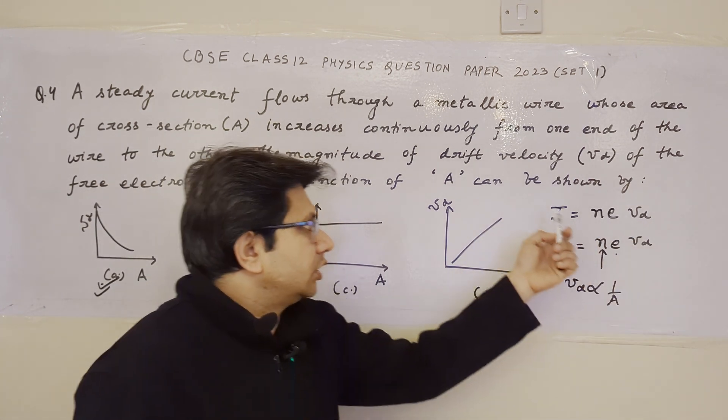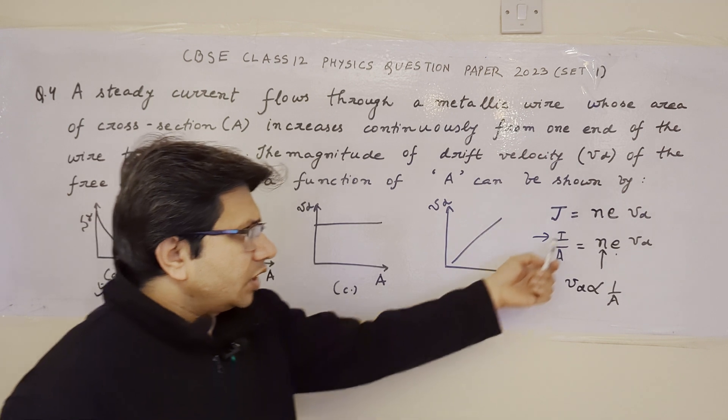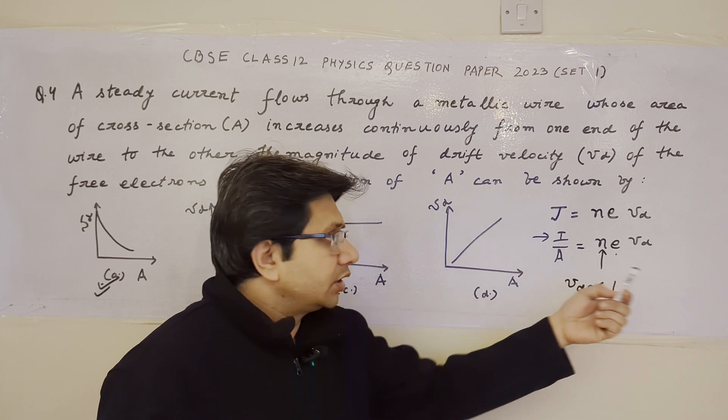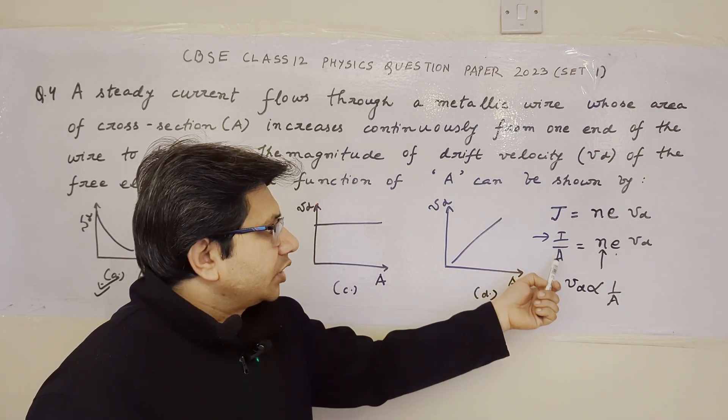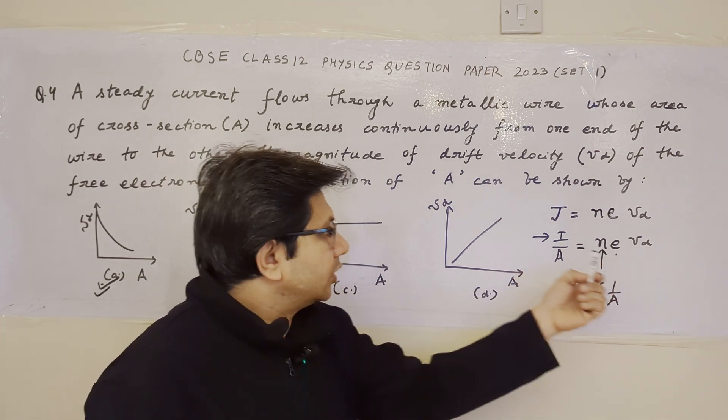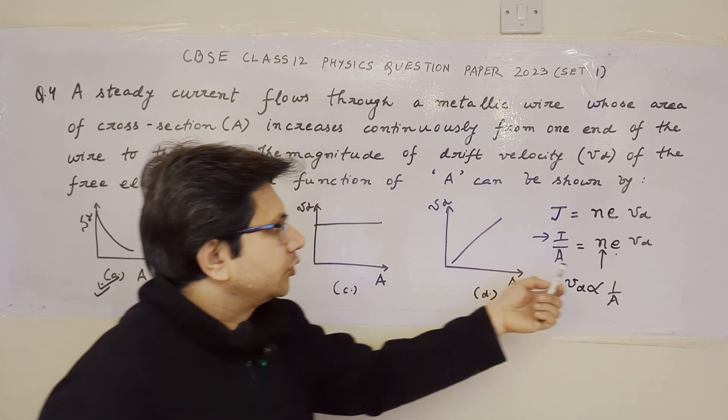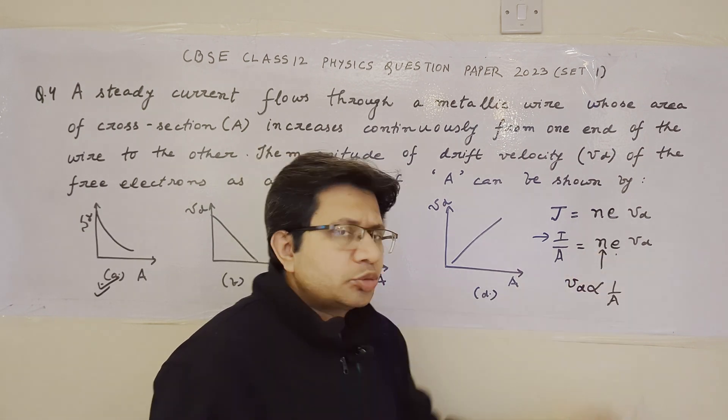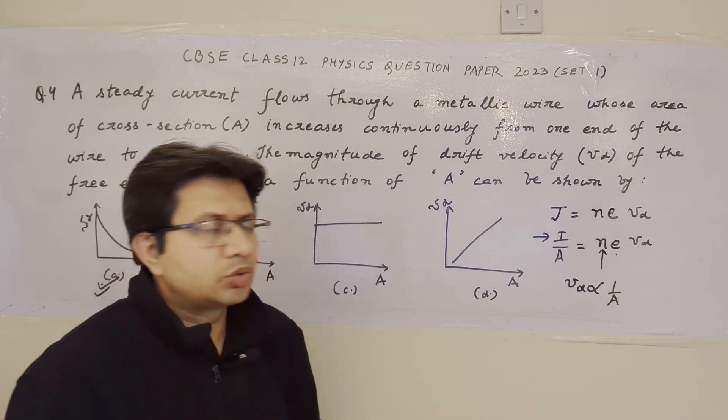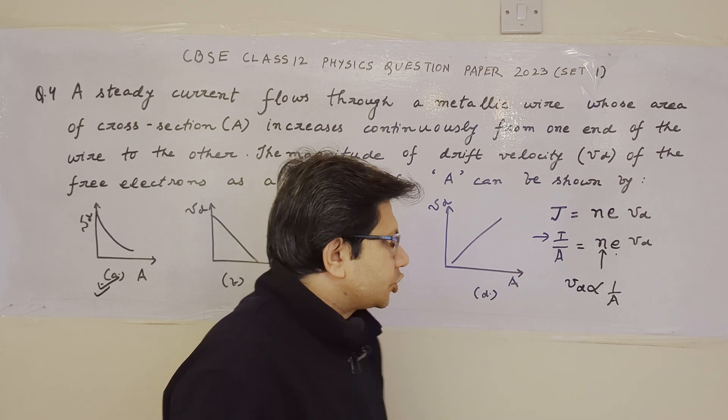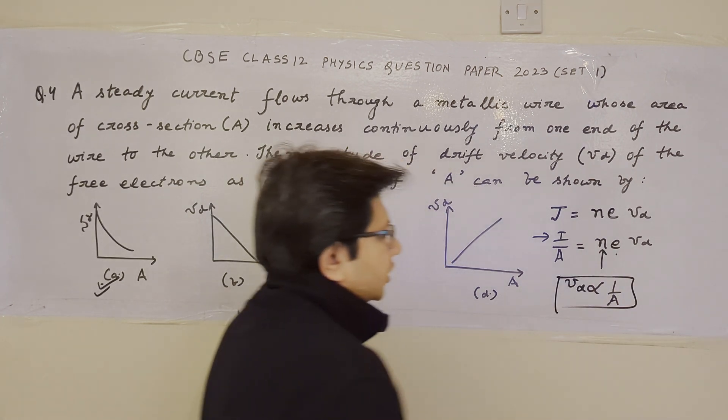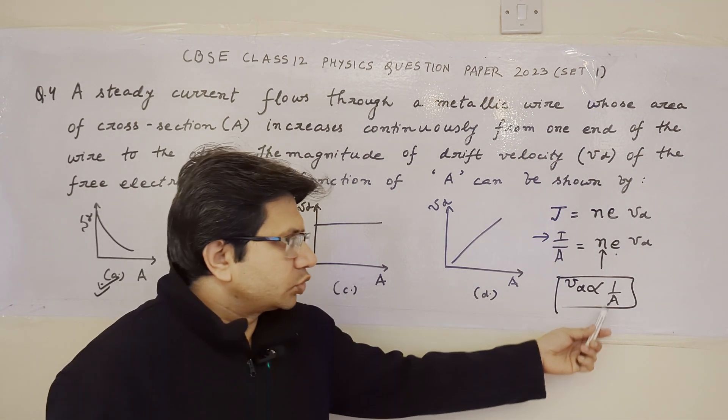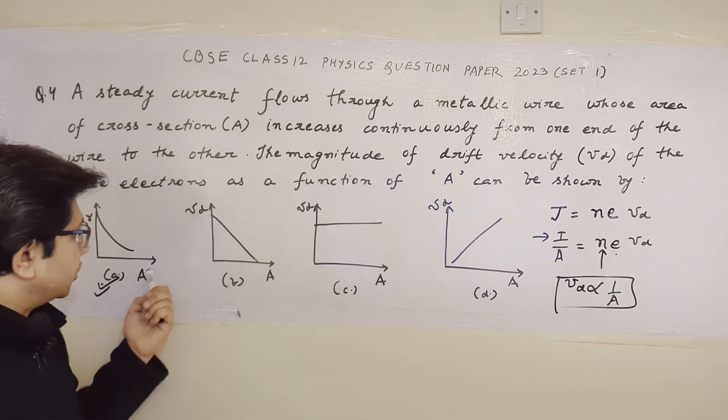Current per unit area equals n e v_d. Here A is changing and we're looking at how v_d changes. I is fixed because steady current is mentioned. The charge density and electron charge (1.6 × 10^-19 Coulomb) are fixed. So the variation of drift velocity has an inverse relationship with respect to the cross-section area. This particular relationship is followed by the first graph. So this is the final answer.